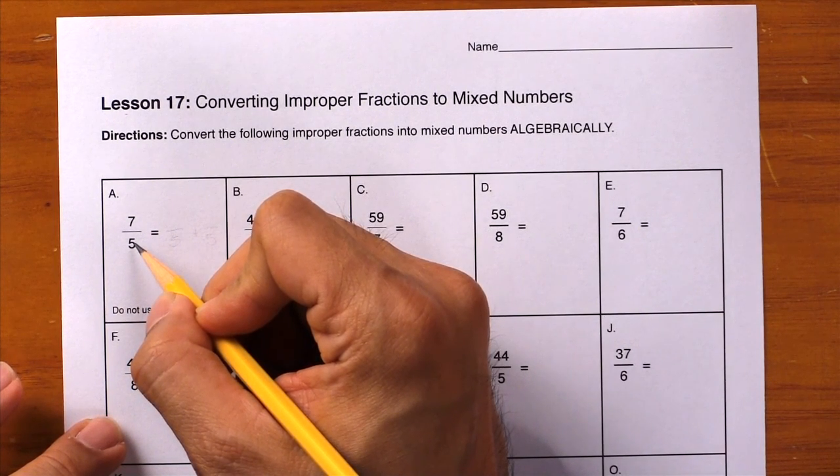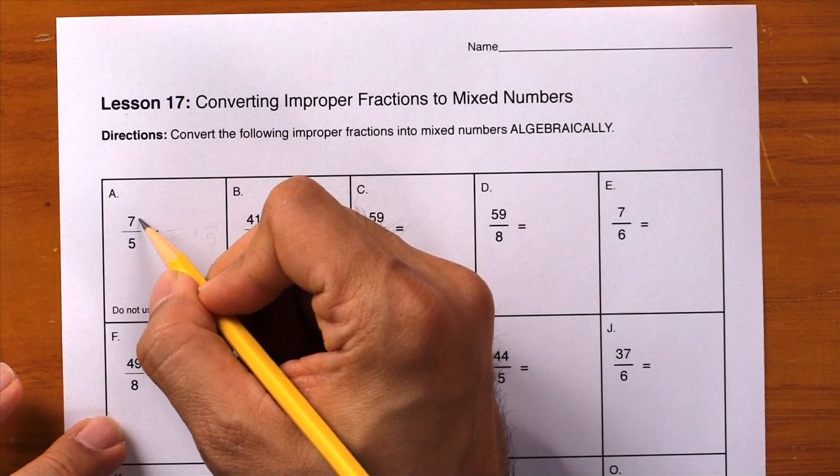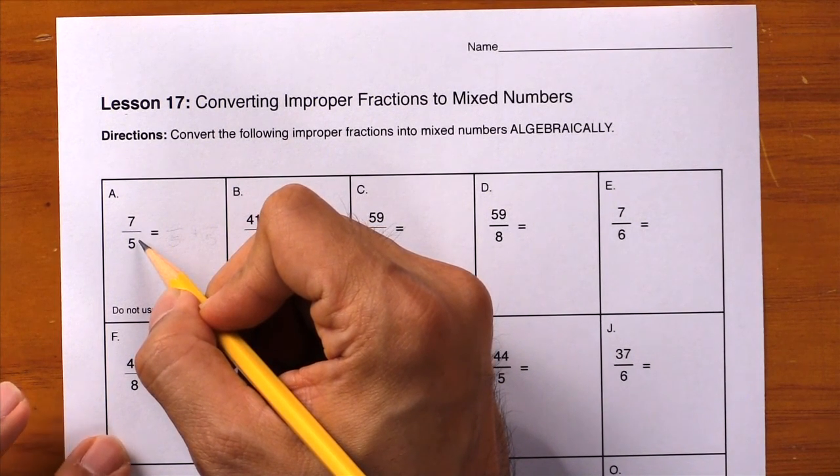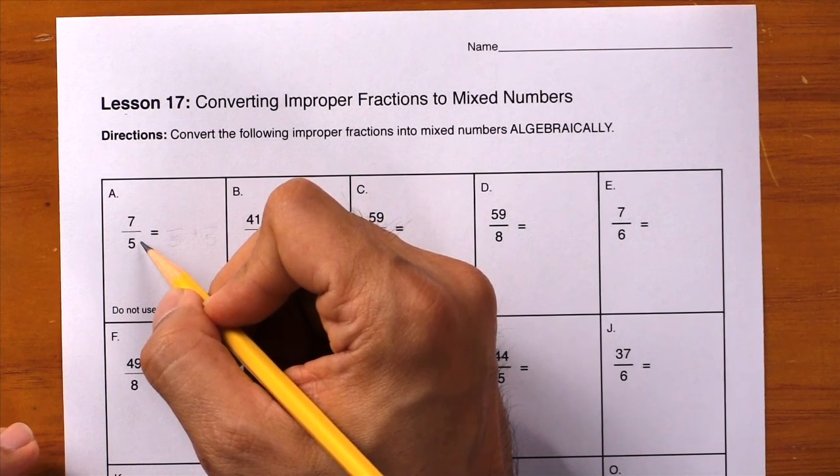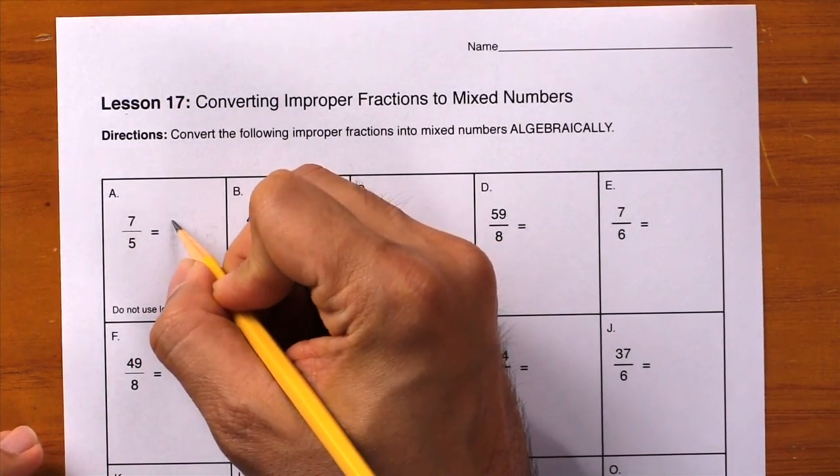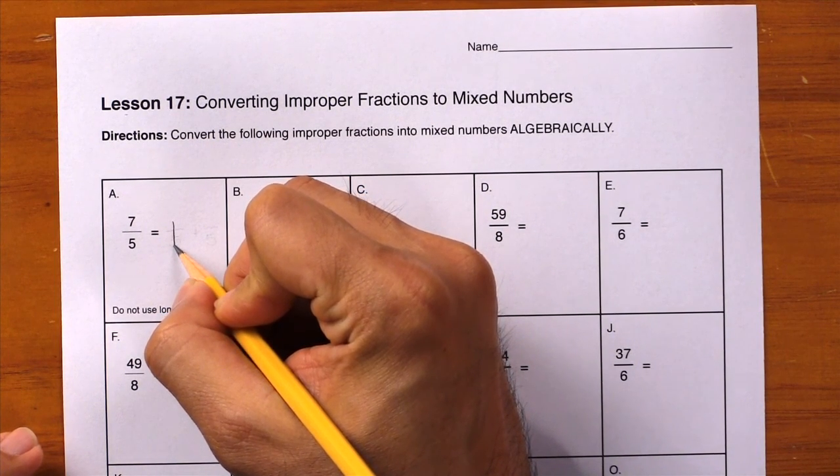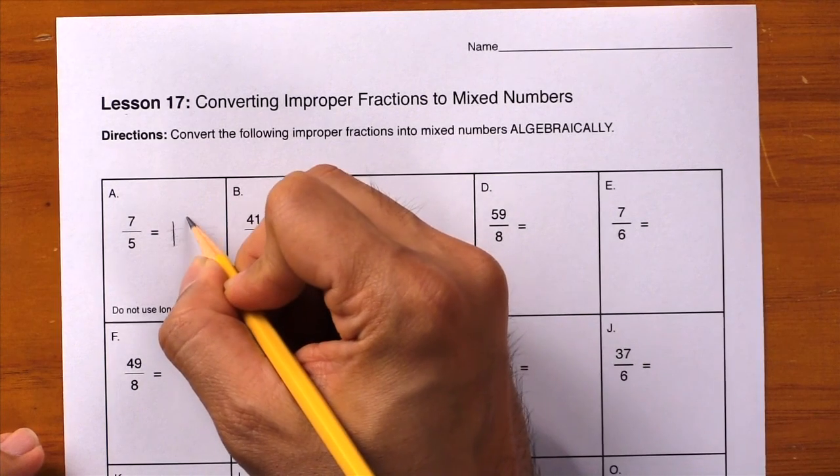So you're going to count backwards. 6 divided by 5, no, but 5 divided by 5 will work, so that's what I'll use. What is 5 divided by 5? The answer is 1, so go ahead and write it down right away as a whole number. What fraction is going to be left over? We'll have 2 fifths left over. Box your answer and you're done.